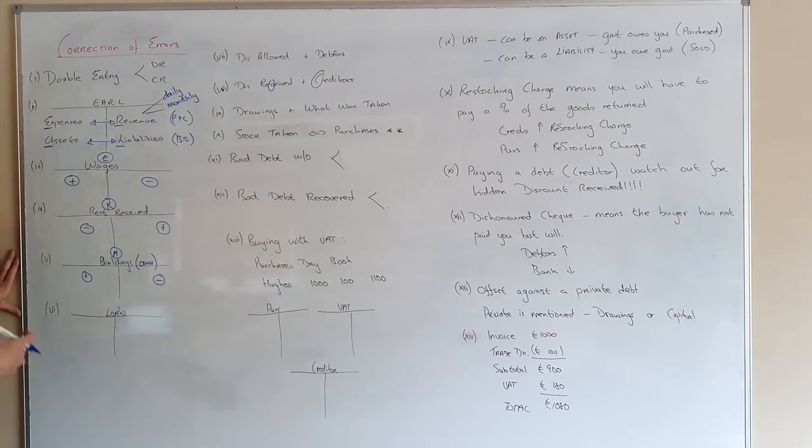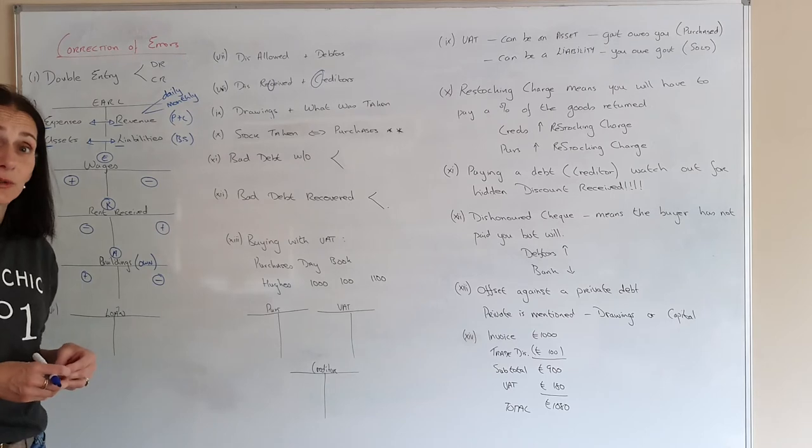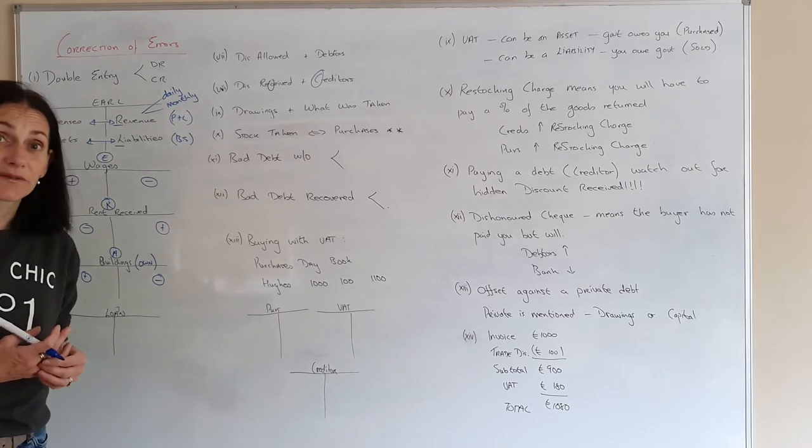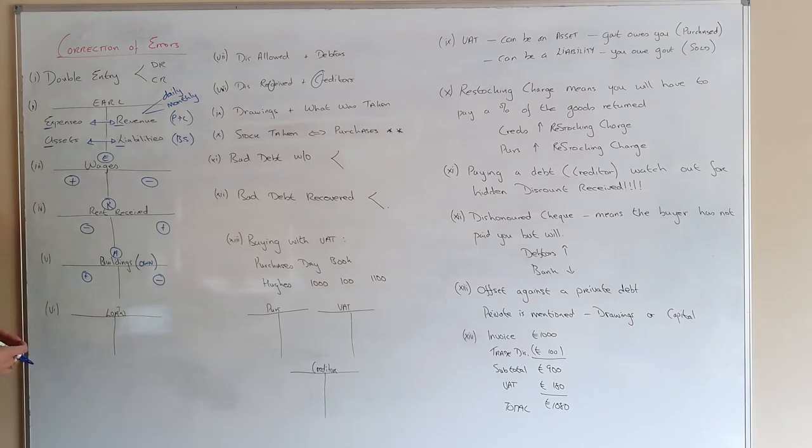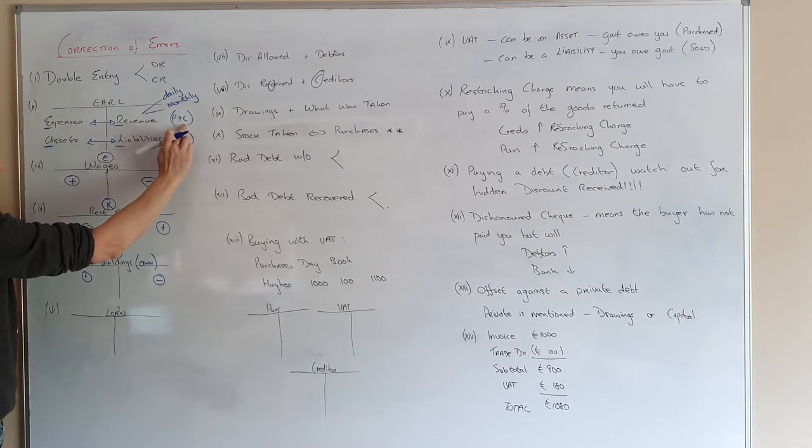A loan. You don't take out a loan every day. A loan might be... Most households take out a huge loan called a mortgage. Most businesses, if you're buying a building, take out a loan called an adventure. So it's something that you probably wouldn't do that often. So it's definitely not daily or monthly. So it's nothing to do with profit and loss.